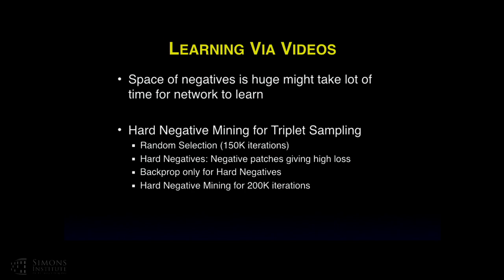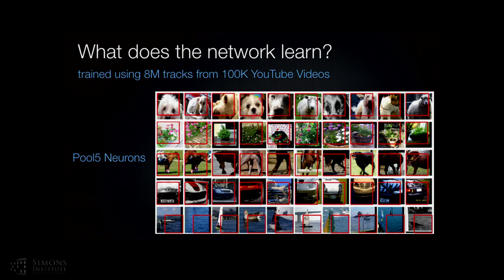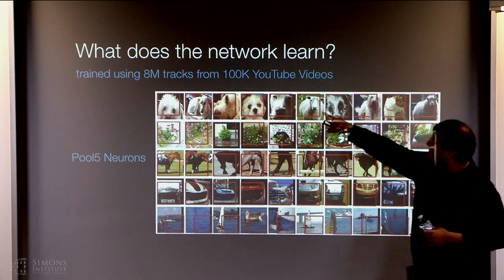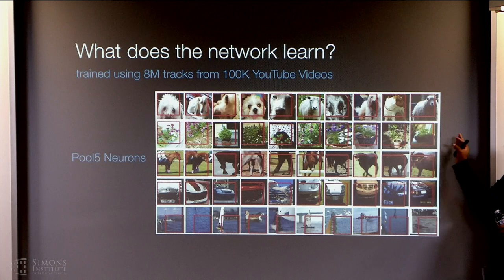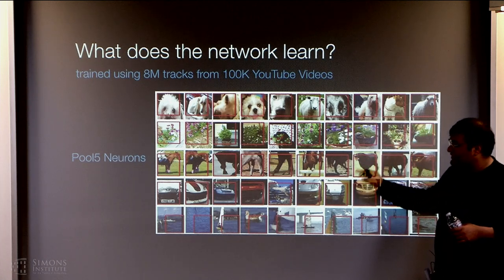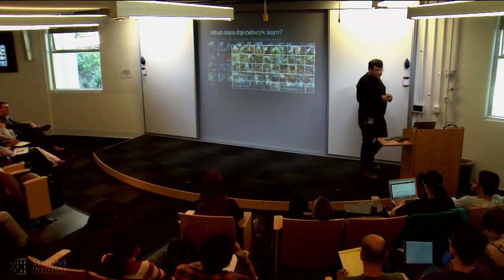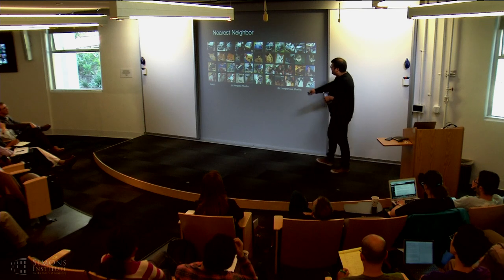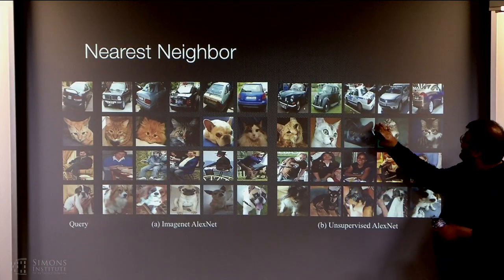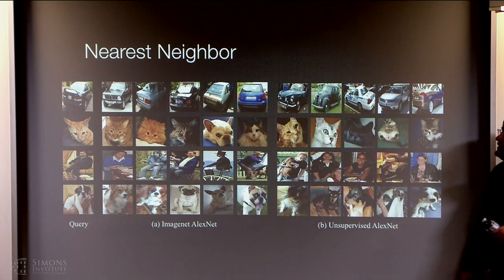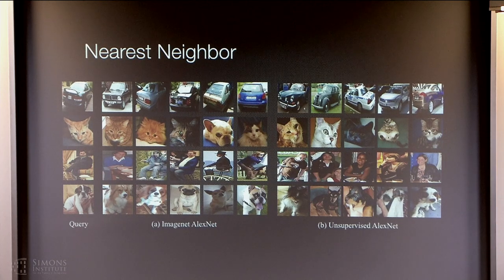To see what the network ends up learning, we look at pool5 neurons that fire a lot. One neuron corresponds to animal faces — dog faces, but sometimes sheep faces come close by. There's a potted plant neuron, a horse-legs or animal-legs neuron, and a neuron corresponding to cars. For nearest neighbors, on the left is ImageNet's nearest neighbor and on the right are ours — sometimes our nearest neighbors have very different viewpoints from the query image, because that's what we're learning: viewpoint invariance.